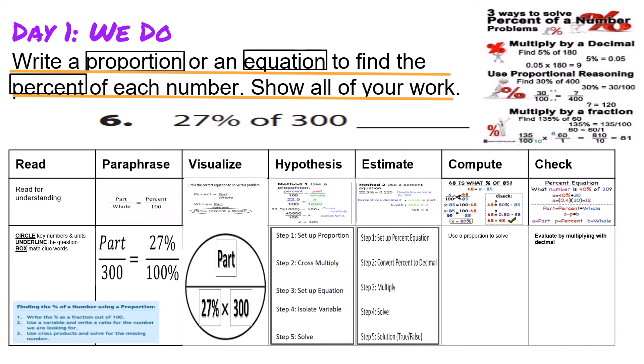Let's set up the proportion and solve using the five steps. Step one: set up the proportion. Step two: cross multiply. We get 100 times part equals 300 times 27. When we multiply 300 times 27, we get 8,100. Now isolate the variable by dividing both sides by 100, leaving us with part equals 81. So our part is 81 and our whole is 300, which is equivalent to 27 percent out of 100.